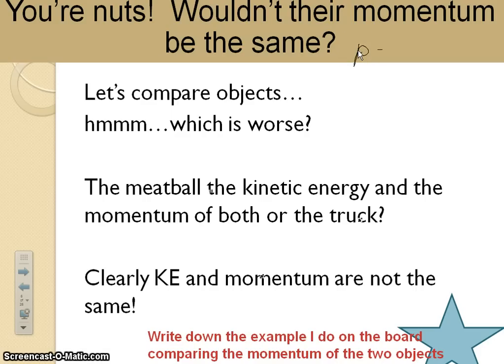If momentum is p equals mv, then if we want to compare the two objects, the mass of the meatball was just one kilogram and the velocity was 1,000 meters per second, it's going to end up to be pretty much equal to 1,000 kilograms times the velocity of the truck, which was just 1 meter per second. The difference is kinetic energy is 1 half mv squared.